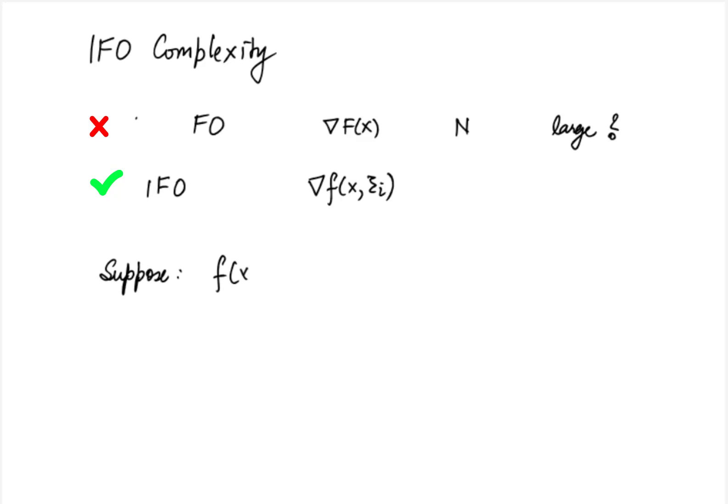For instance let f of x comma xi i be L smooth and mu strongly convex. Then the best algorithm we know so far is the accelerated gradient descent. We know that the first order complexity of accelerated gradient descent, if we calculate its IFO complexity we will get order of n times square root of L over mu log of 1 by epsilon.